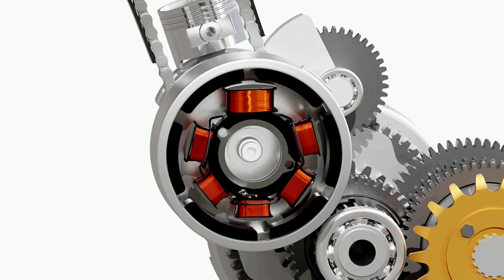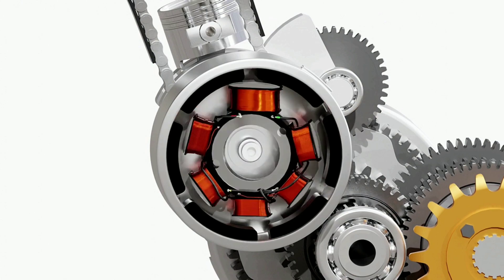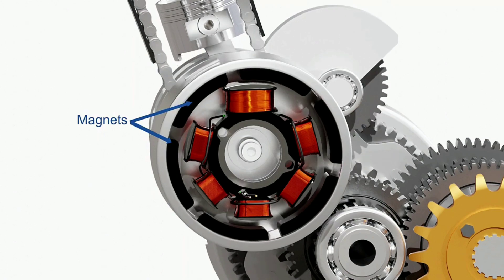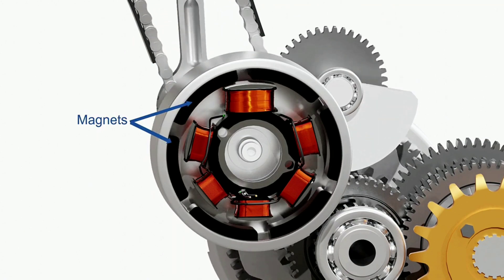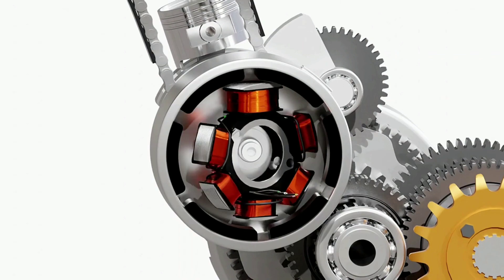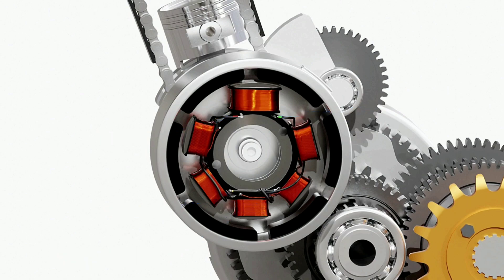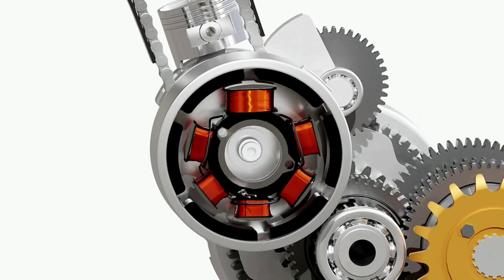The stator is a stationary coil of wires. The flywheel of the motorcycle has a set of permanent magnets which revolves around the stator and produces alternating current in the coils. Each output from the stator has different purposes as shown here. The output for ignition is received from the exciter coil, which has a denser winding of thinner wire than the other coils to produce higher voltage for ignition.